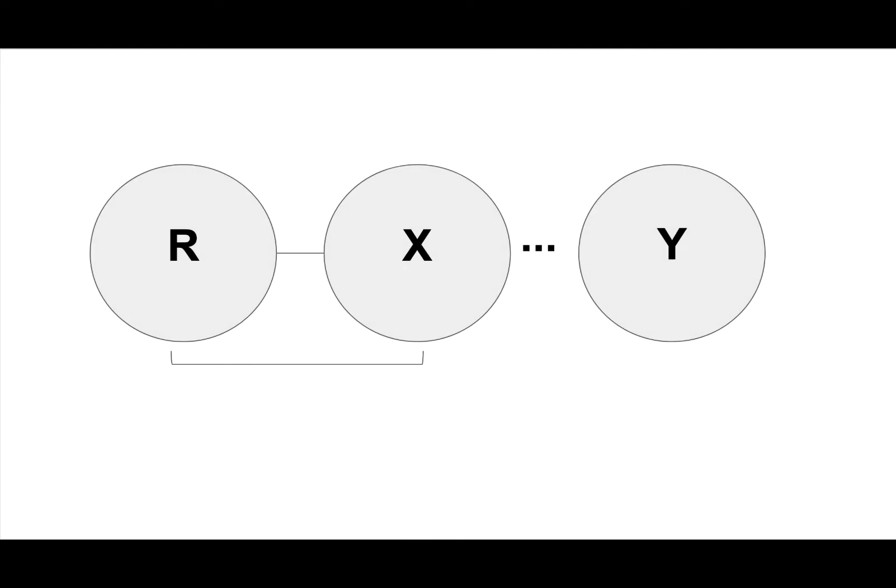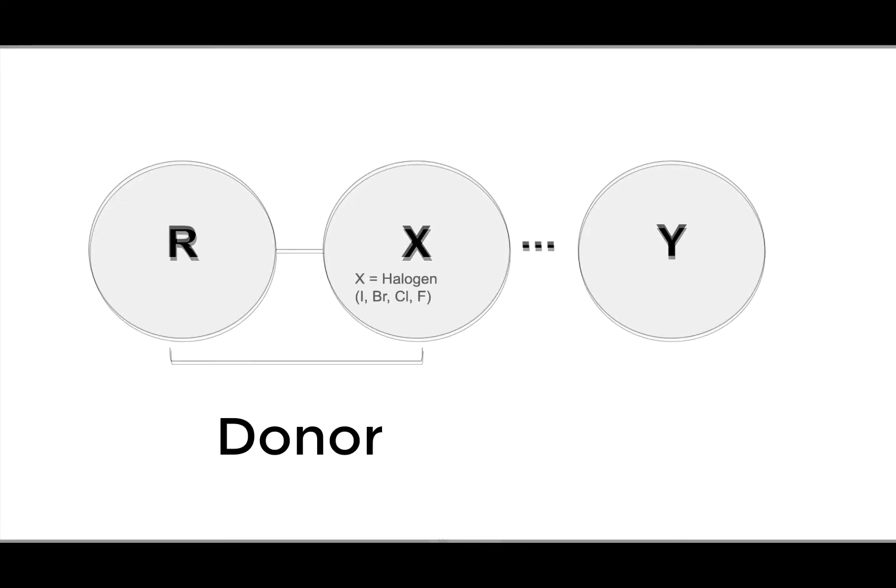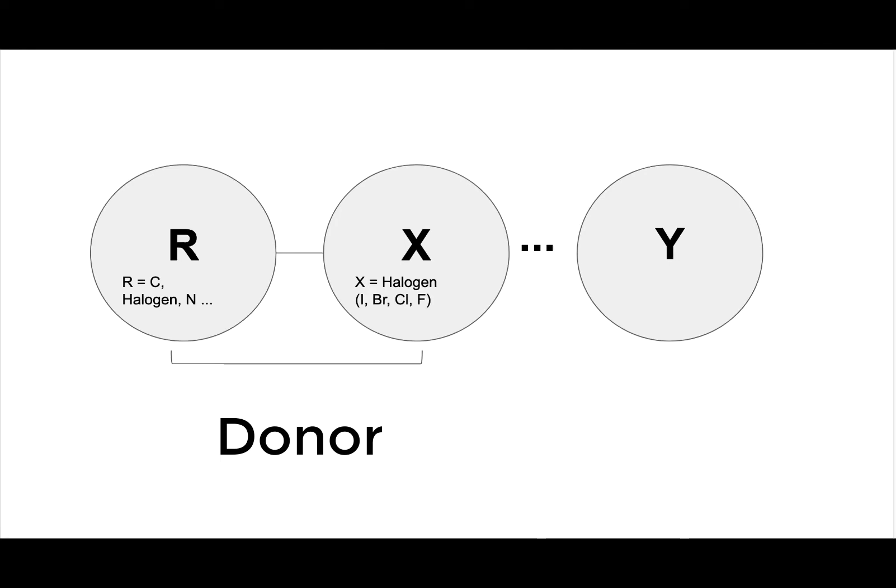Typically, the halogen bond is defined by three atoms: R-X and Y. The R-X group acts as the halogen bond donor, where X is the halogen atom covalently bound to an R group, which may be a carbon, nitrogen, or another halogen atom.